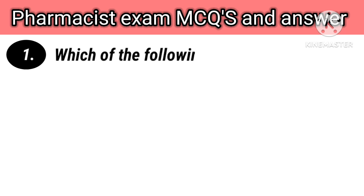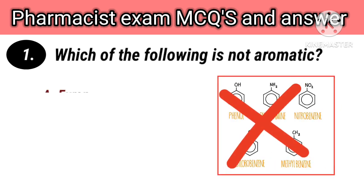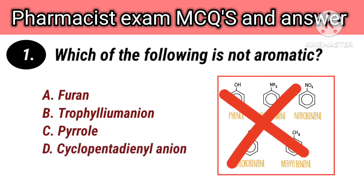Which of the following is not aromatic? Options: A. Furan, B. Tropylium cation, C. Pyrrole, D. Cyclopentadienyl anion. Right answer is B. Tropylium cation.